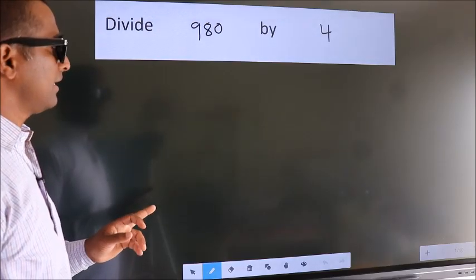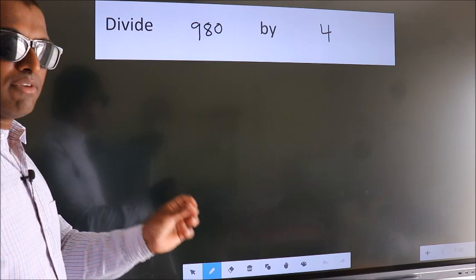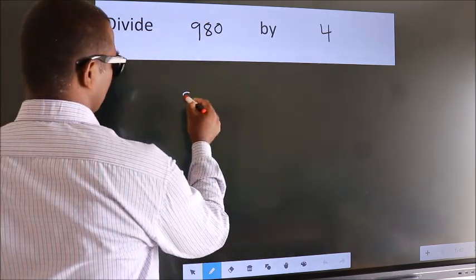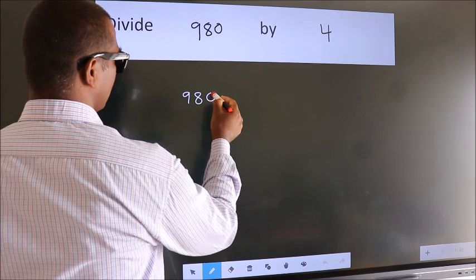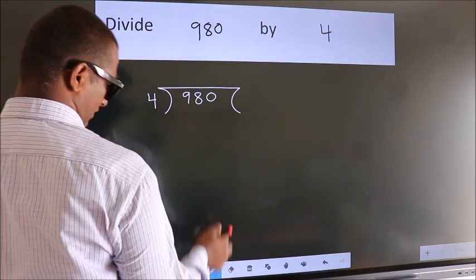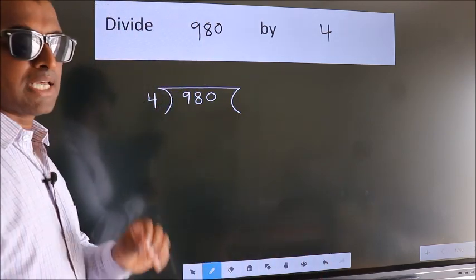Divide 980 by 4. To do this division, we should frame it in this way. 980 here. 4 here. This is your step 1.